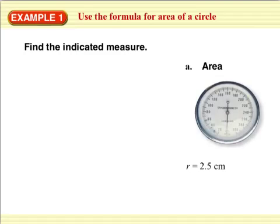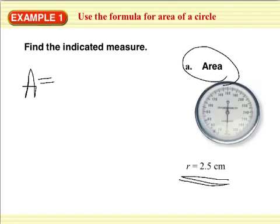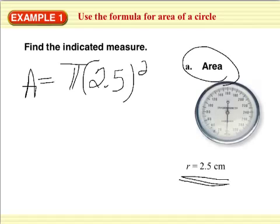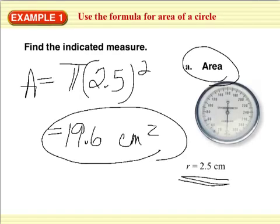Area of a circle is pi times r squared, where r is the radius of the circle. Let's try one. Find the indicated measure. If we're trying to find area and we know the radius is 2.5 centimeters, so area equals pi r squared. So grab your calculator and calculate it. I have pi times 2.5 squared. My area is 19.6 centimeters squared. Area is always going to be in units squared. Volume is cubed. Length is just whatever unit it is.